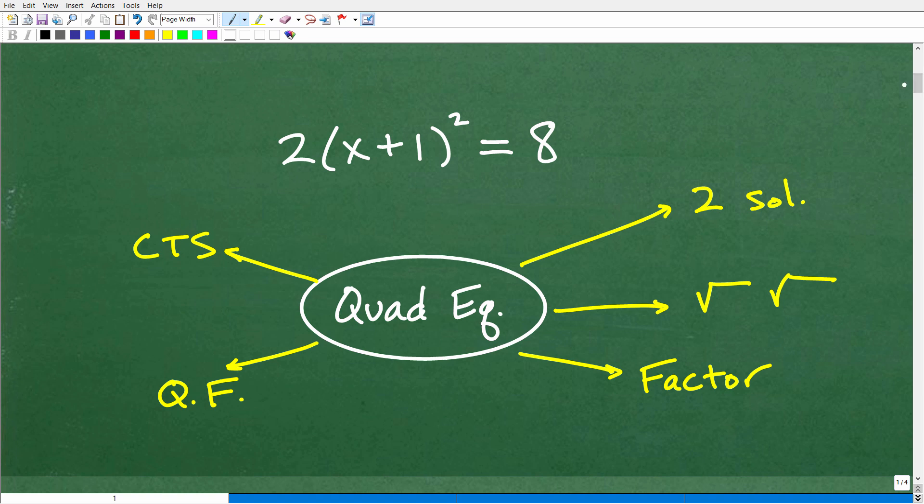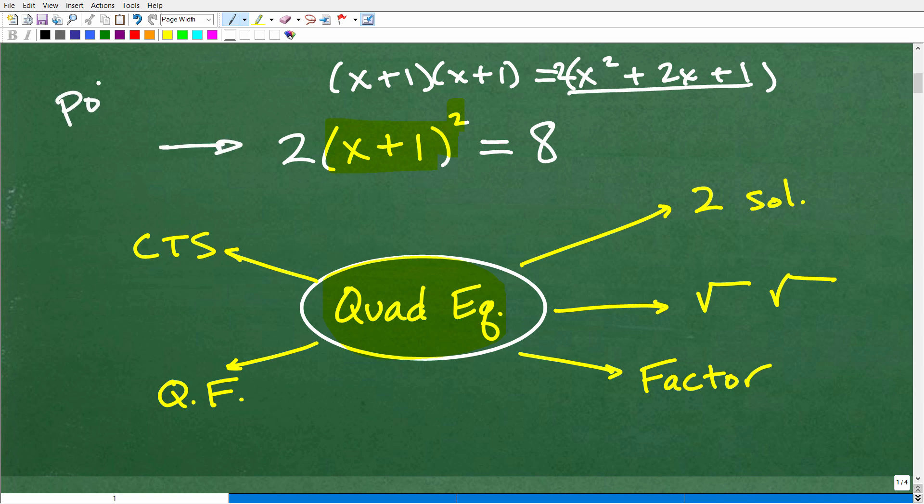So this equation happens to be a quadratic equation. So why is it a quadratic equation? Well, we have this x plus 1 squared. If I take this x plus 1 and multiply it, x plus 1 times x plus 1, you're going to get a nice, lovely polynomial. But if you don't recognize this as a polynomial, so let's just go ahead and do this here. This is x squared plus, let's see here, we'll get a 2x plus 1, and then that'll be multiplied by 2 here.